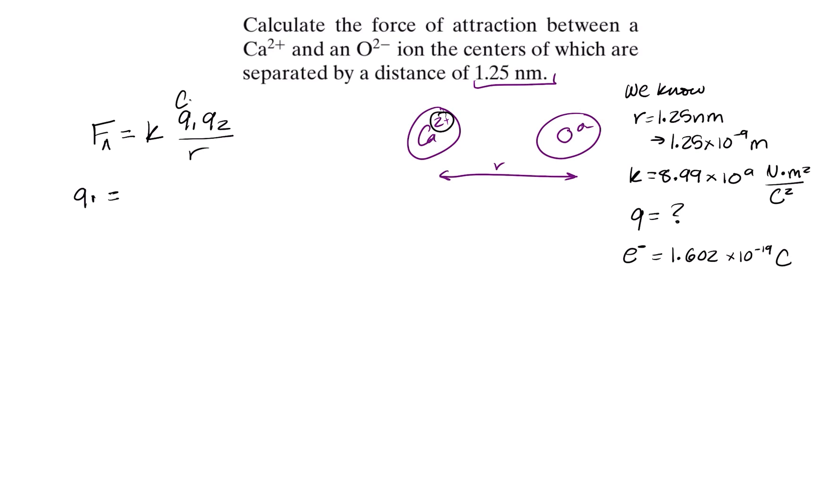So let's say q1 is going to be calcium, q2 is going to be oxygen. So calcium, we're going to go ahead and take our 2 times the charge of an electron, and we're going to do the same for q2.